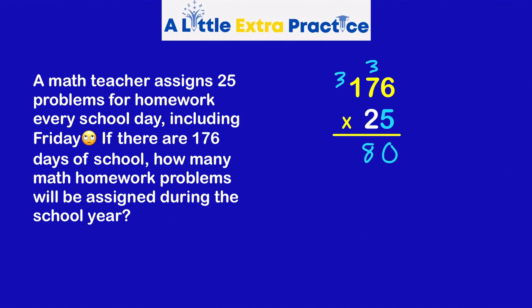5 times 1, of course, is 5. Plus 3 is 8. Cross these off so I don't get mixed up later. Cross the 5 off. I'm done with that. Put a 0 down here. I'm multiplying 176 times 20.